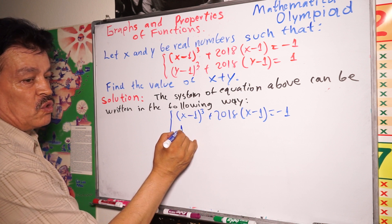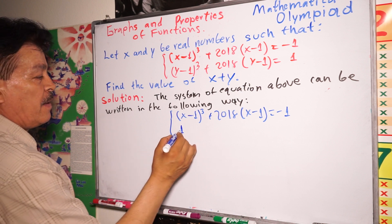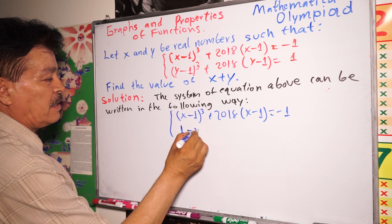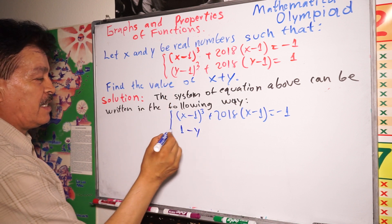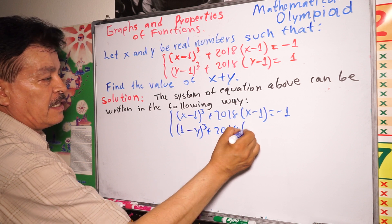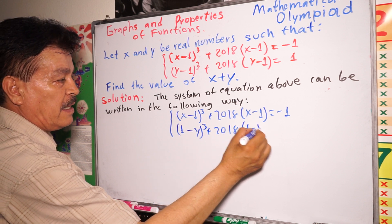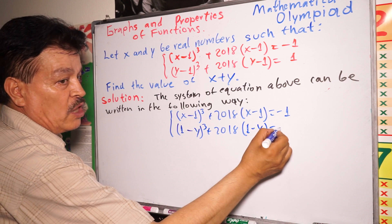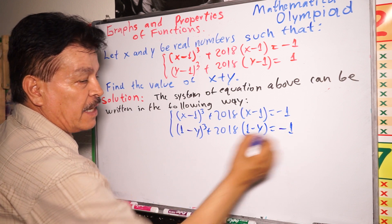So (1-y)³ + 2018(1-y) = -1. Okay, alright.